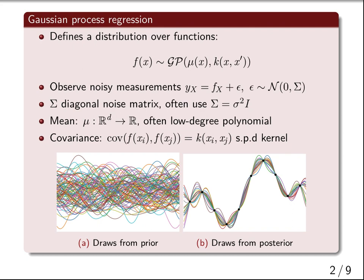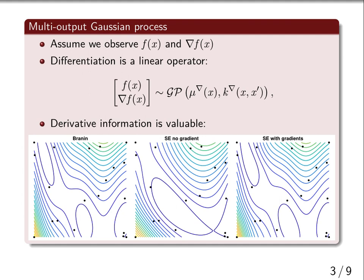A GP prior on f implies a multivariate Gaussian distribution over the function values and their gradients. The value of the derivative information is clearly illustrated by the figure. On the left you can see the true contours of the Branin function. In the middle is a GP without gradients, and on the right is a GP with gradients. The latter looks much closer to the ground truth than the former.